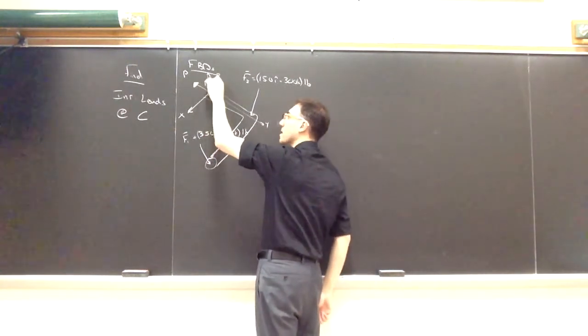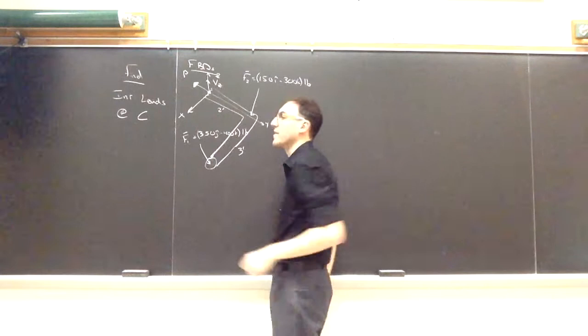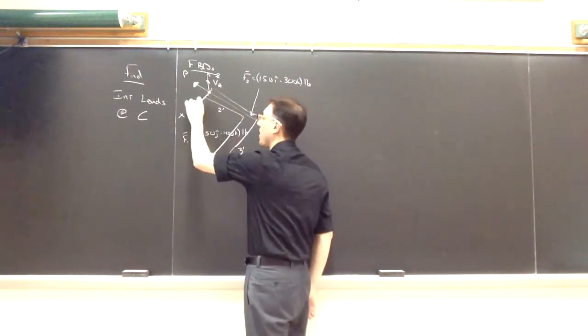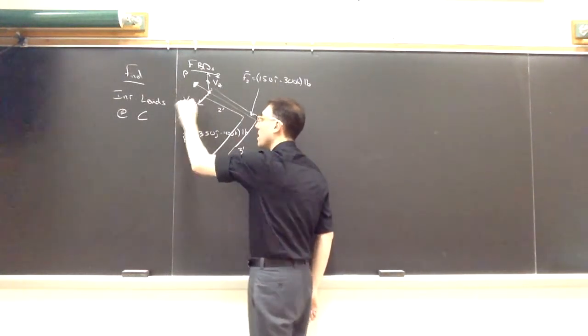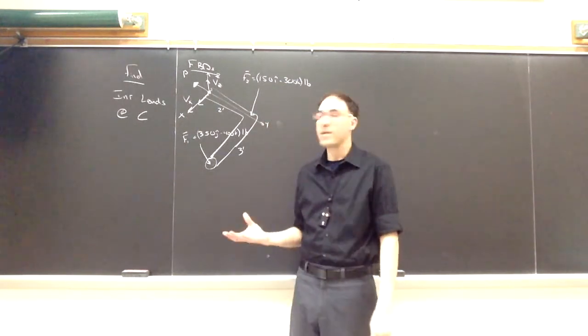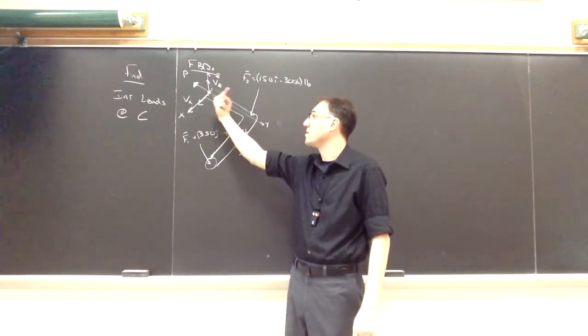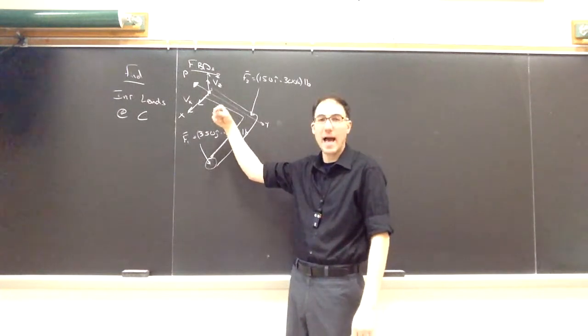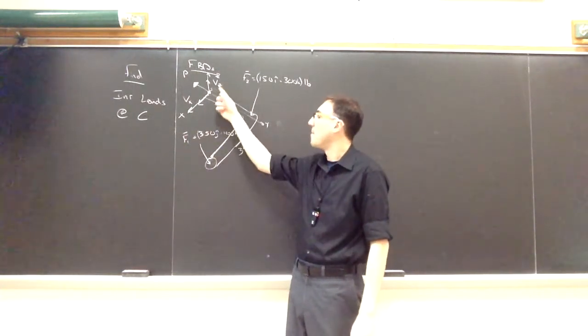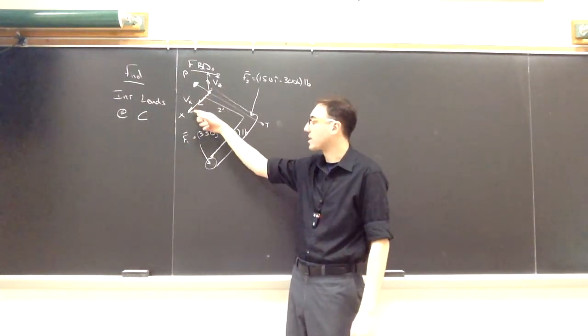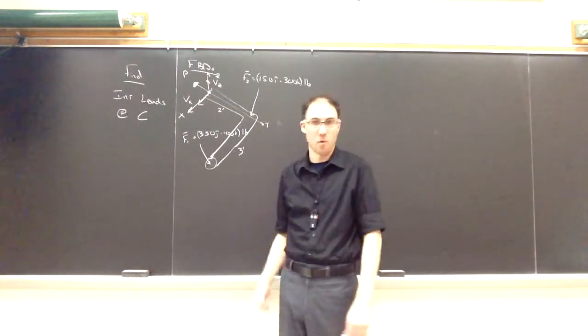So in this case, I'll have a component along the z, I'll assume as positive called v sub z, and a component along the x, I'll call vx. Again, in reality, there's really only one shear force. There's only one force that's going to be parallel to that plane of the cut. But for convenience, I can split it up into an x component and a z component of that single force.